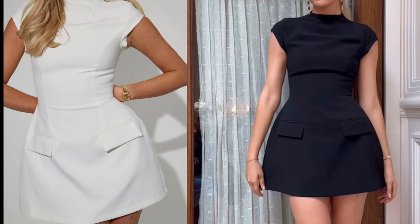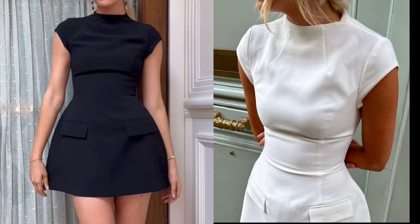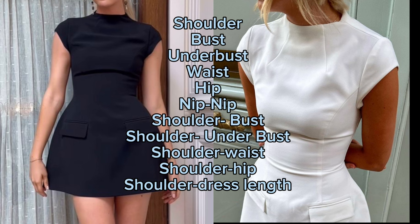Before we go ahead with the drafting, let's first analyze this dress so it will be easy to understand the pattern. The first thing you'll notice is that it has an imbued turtleneck with darts running down both sides of the neckline for better fitting. It's a bustier dress with a double welt pocket with flap, cap sleeves, and an exaggerated hip. I'll place the measurements you'll need right on the screen.